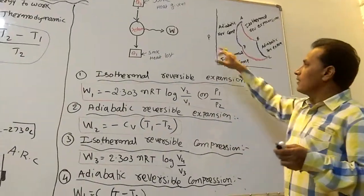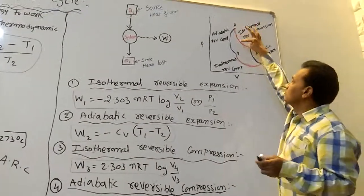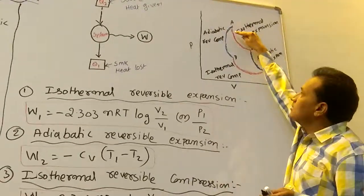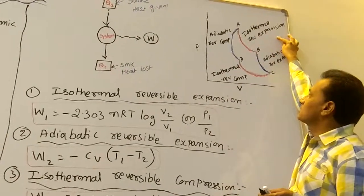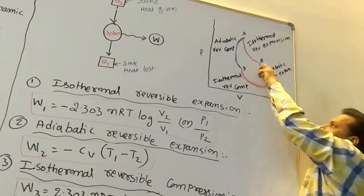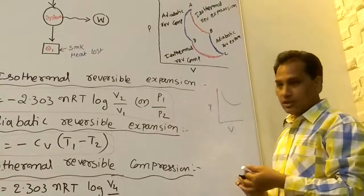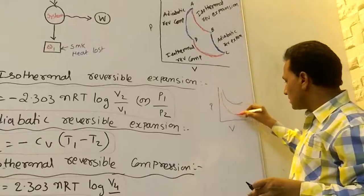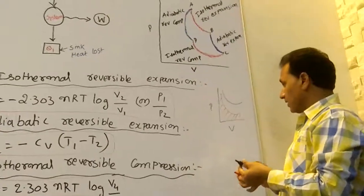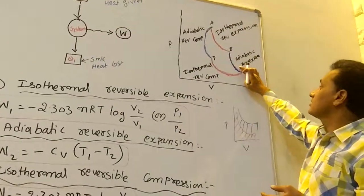He explains the graphical representation of the Carnot cycle using a PV graph. On the PV graph, the first curve from A is isothermal reversible expansion — more area means more work done. The next curve is adiabatic reversible expansion. Under isothermal conditions, work done is maximum; under adiabatic conditions, work done is less. The red curve is the isothermal expansion curve.